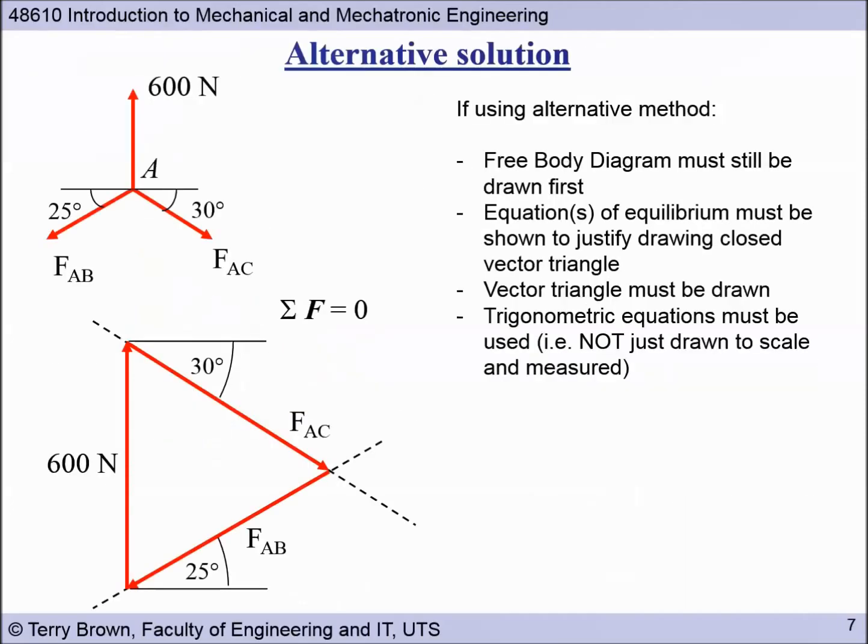Alright. So just a point to note. If you're using this alternative solution, the vector triangle method, where we have a closed triangle, justification for doing that is sum of the forces equals zero. So as a solution to a quiz or assignment problem, you must still draw the free body diagram first, show the equations of equilibrium, which justify your next step, which is drawing the vector triangle. Okay. So when you do this, you must use trigonometry. Don't just draw it to scale and measure. If you want to do that as a check by all means, but once you get to university, you should be using trigonometry to do these calculations.